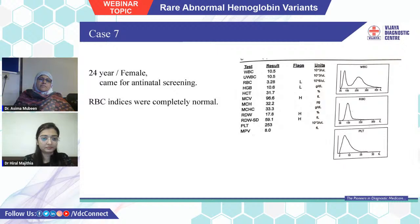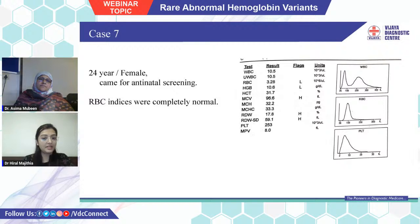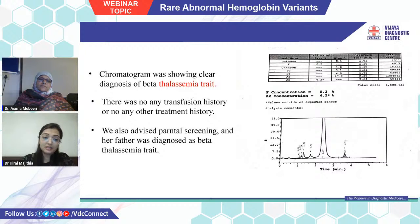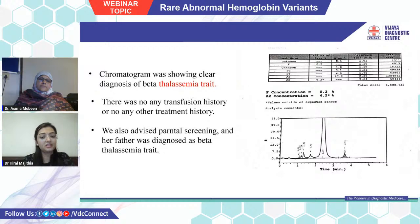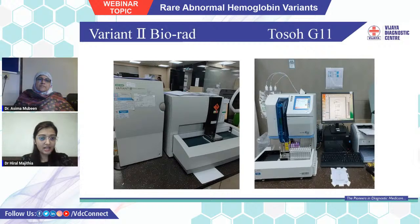Case 7: a 24-year-old female presenting for antenatal screening. Her RBC indices were completely normal, but the chromatogram clearly showed values like thalassemia trait — HbA2 at 4.2% — with no transfusion or treatment history. We advised parental screening, and her father was diagnosed as beta thalassemia trait. This was a rare case of thalassemia trait with normal RBC indices. The instruments we use in our lab are Variant 2 from Bio-Rad and Tosho G11 for HPLC testing.